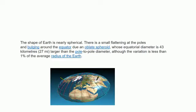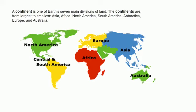The shape of Earth is nearly spherical. There is a small flattening at the poles and bulging around the equator due to the oblate spheroid, whose equatorial diameter is 43 kilometers larger than the pole-to-pole diameter, although the variation is less than one percent of the average radius of the Earth. The land bodies on the Earth are known as continents.